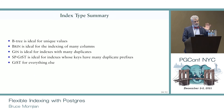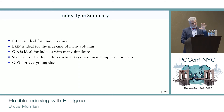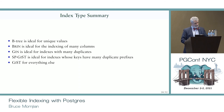Index type summary: Btree is ideal for unique values. BRIN is ideal for many columns on large tables. GIN is for duplicates. SPGIST is for duplicates in prefixes. And GIST is for everything else — especially geometric and range types. That's the cheat sheet. These slides are online, so if you forget, go back there.